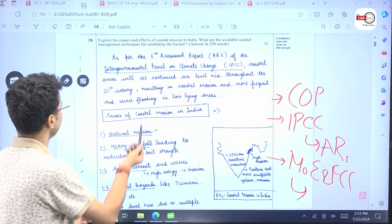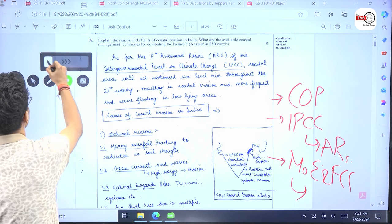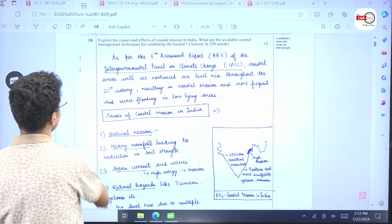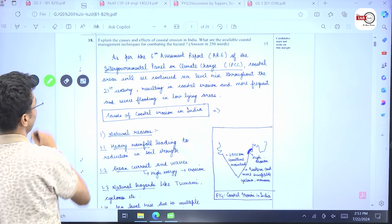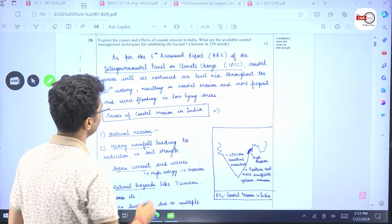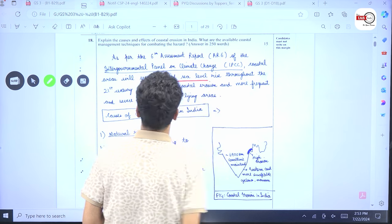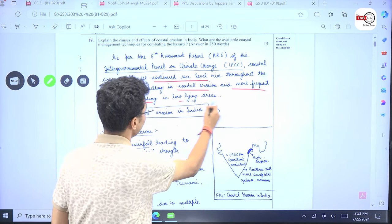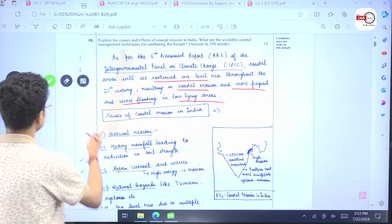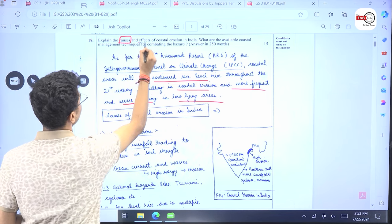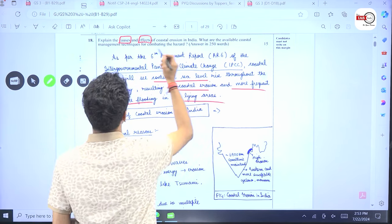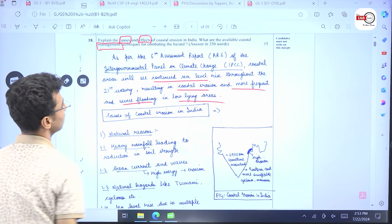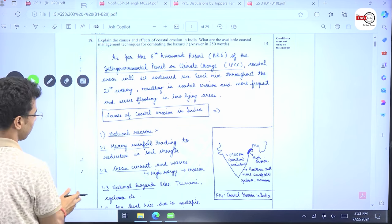So, we're talking about coastal erosion. As per the sixth assessment report of the Intergovernmental Panel on Climate Change, coastal areas will see continued sea level rise throughout the 21st century resulting in coastal erosion and more frequent severe flooding in low-lying areas. Causes? Simple. Cause is asked. Effects are asked. What are the management techniques? So, this is a very straightforward question.